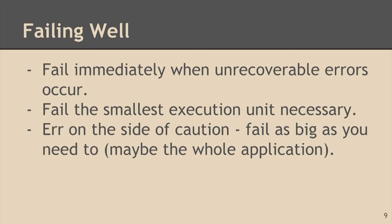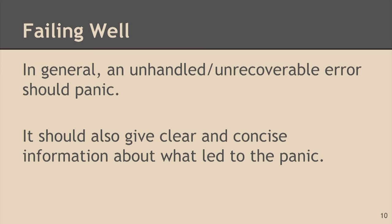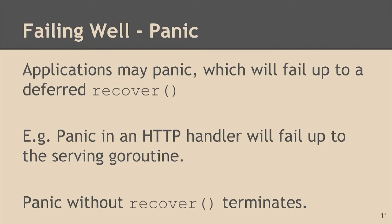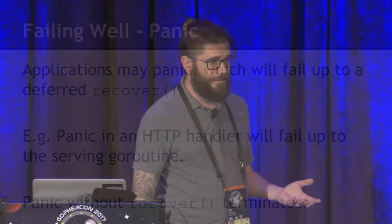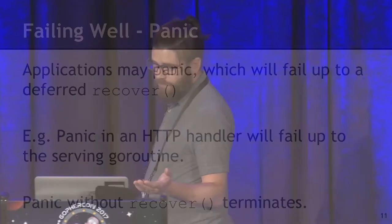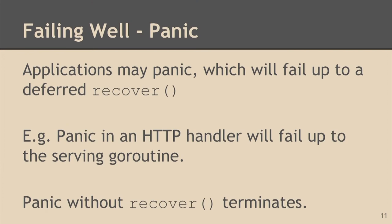You want to fail the smallest execution unit necessary. If you have a service with service handlers, if it's possible to just fail the handler so that the whole service doesn't come down, then do that — it's totally fine. But err on the side of caution: if you need to blow up the whole application, do it. In general, an unhandled or unrecoverable error should panic. It should provide clear and concise information about what led to the panic. The panic gives you a stack trace, which tells you where in the code things went wrong, but you also want to add more context. In Go, applications may panic, which will fail up to a deferred recover. You could panic an HTTP handler and fail up to the serving goroutine and keep going — that's what I meant by failing the smallest execution unit necessary.